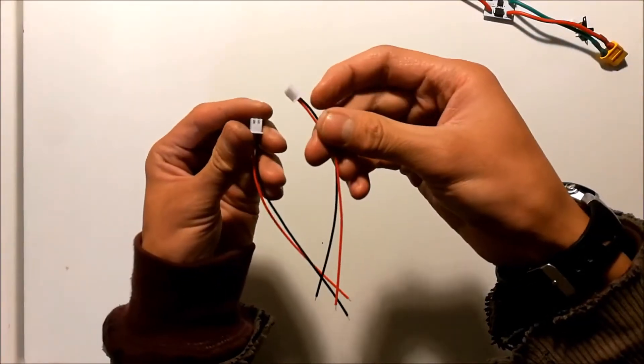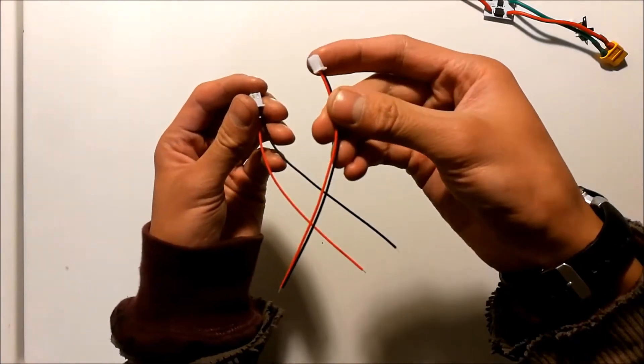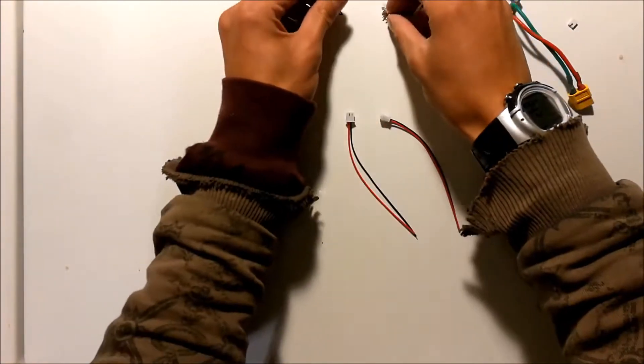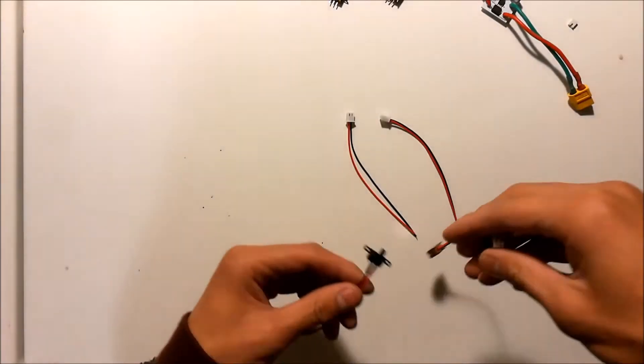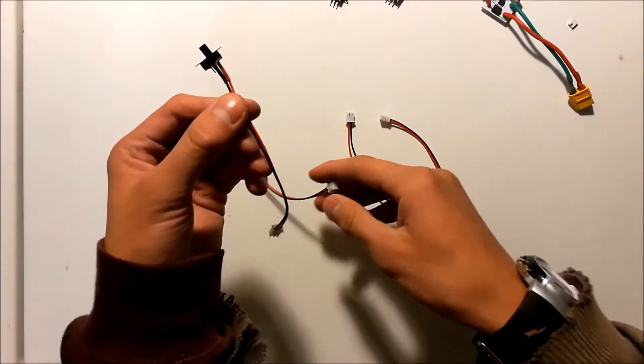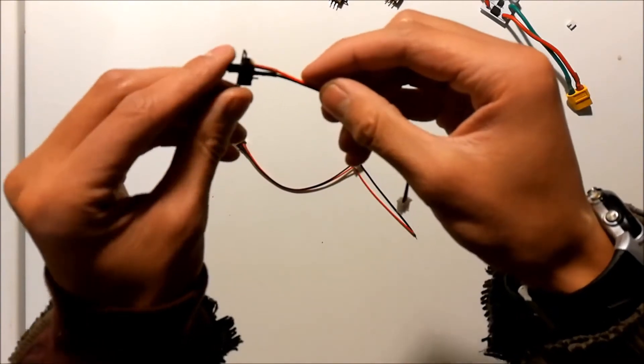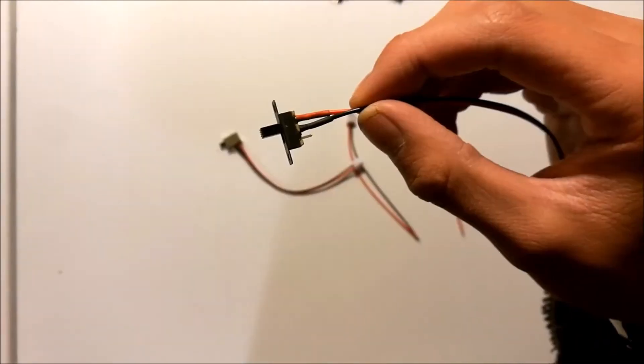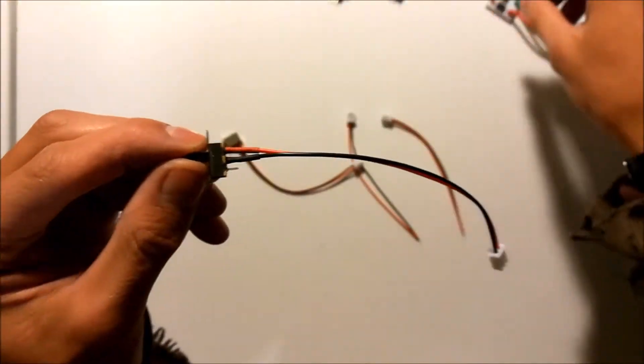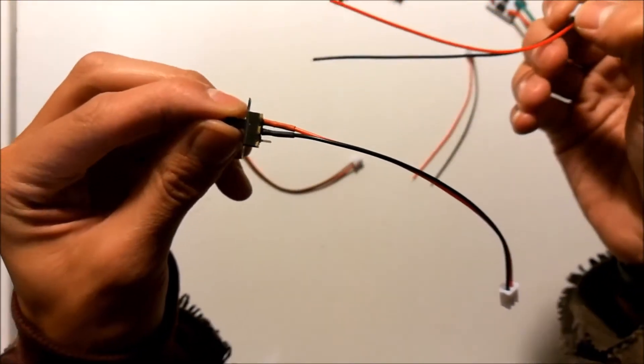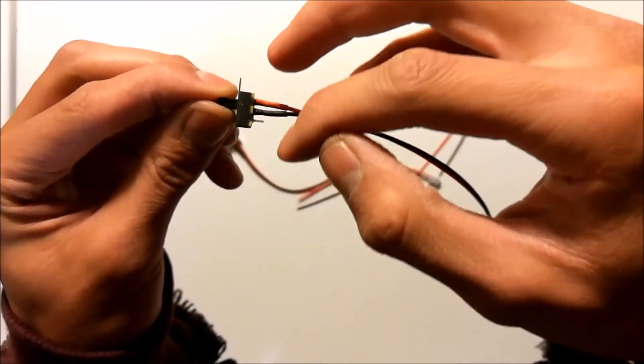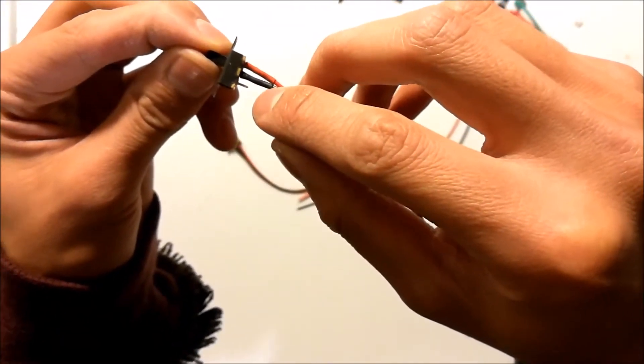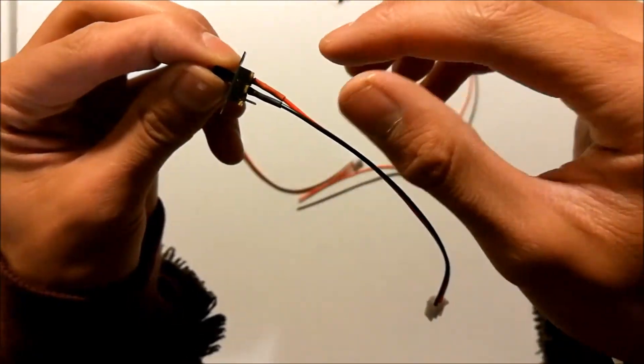First thing you want to do is to solder your JST connectors to your slider switch and your stock switch. So once you do that, it will look something like this. You also might want to heat shrink it since the connections are super close together. So for the slider switch, using the one included, you want to solder one of the wires to the middle pin, and to either the left or the right pin, it doesn't matter. It just matters that at least one wire is on the middle one, and another wire is on either side.